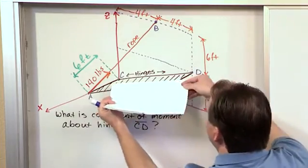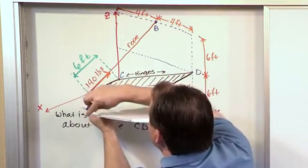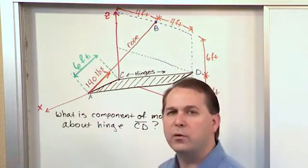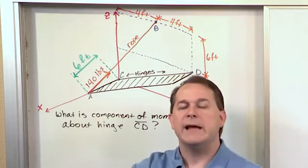So clearly if you have a door on a hinge line like this and you've got a rope attached to this corner and you start pulling on it, the door is going to tend to open. So a moment is going to develop and it's going to open.